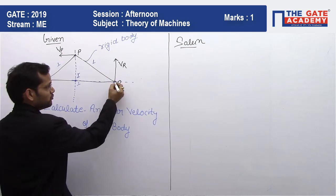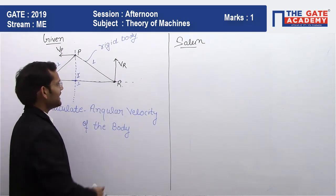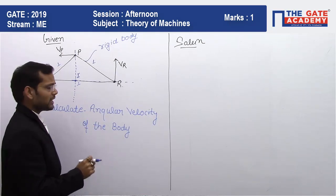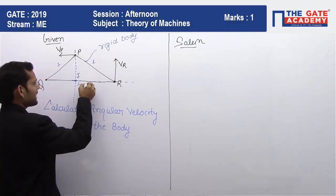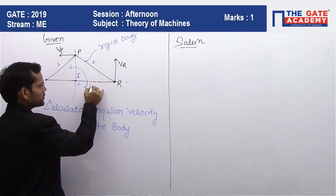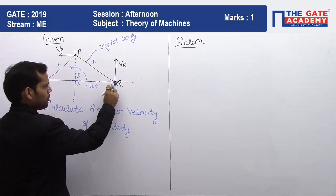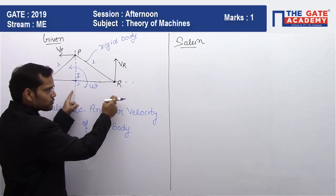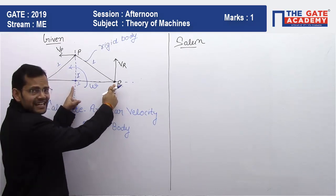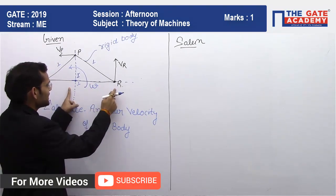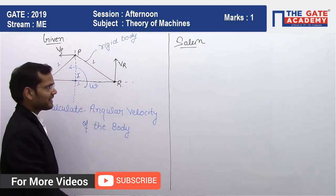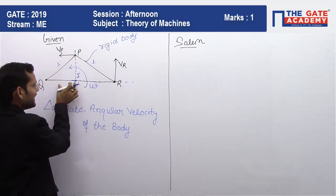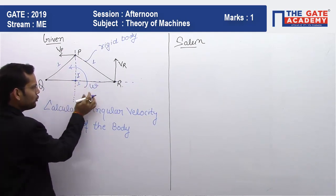All points on this body will undergo pure rotation about the instantaneous center, and the velocity at the instantaneous center itself will be zero. The velocity of point R is given as VR. About the instantaneous center, all points are in pure rotation. If the body rotates with angular velocity omega, the velocity of point R will be equal to the radius of point R from the instantaneous center multiplied by omega. Since this is an equilateral triangle, the perpendicular from point B will intersect the base QR in two equal parts.